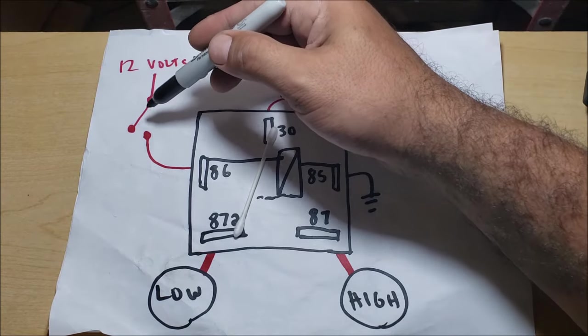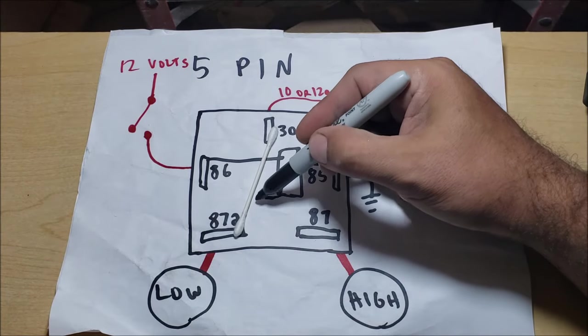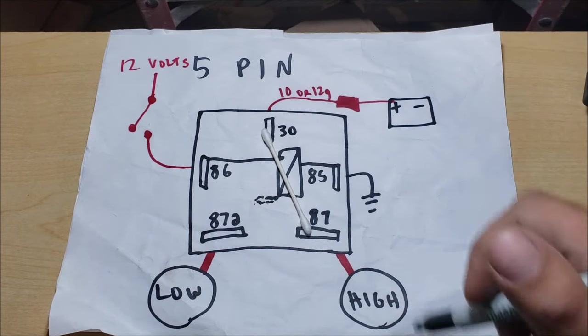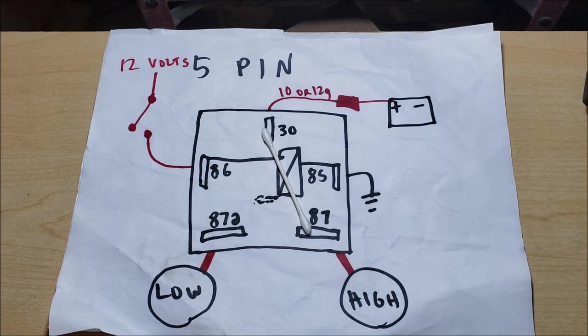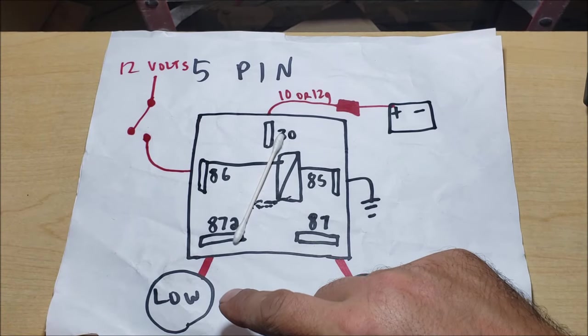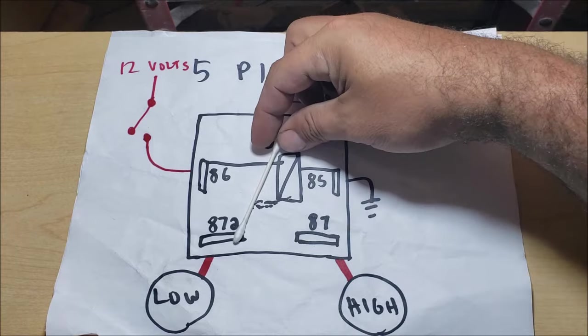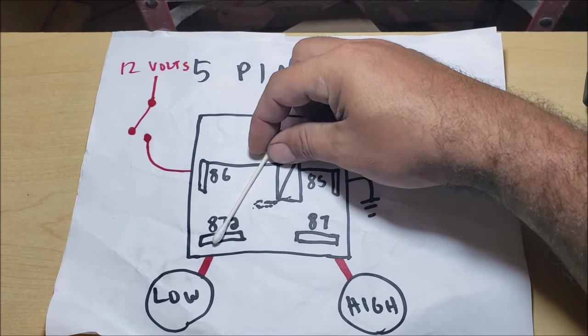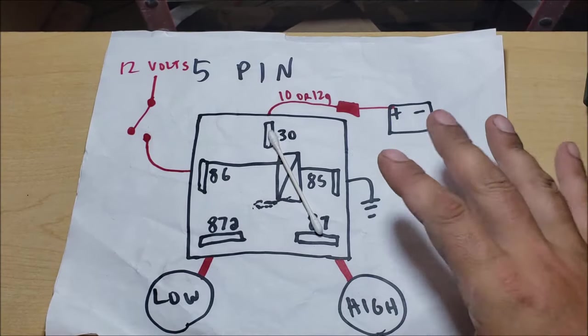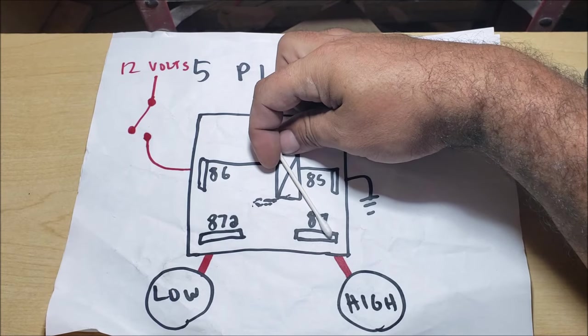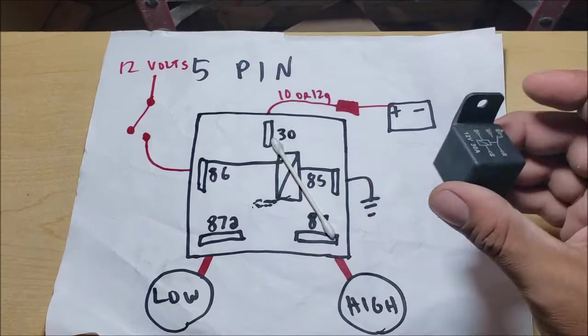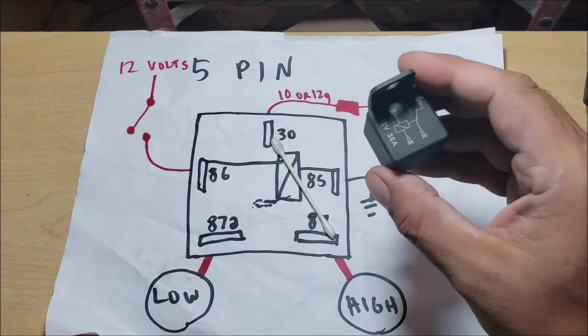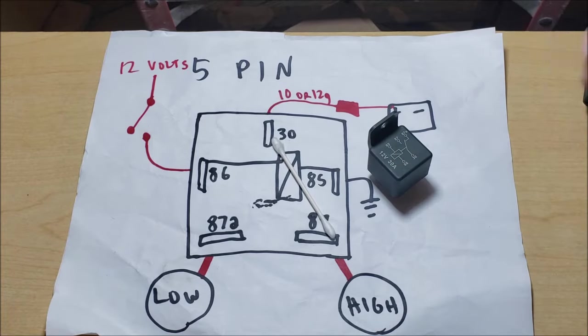So then you turn your high beam switch on, goes to 86, energizes the electromagnet and then it closes this switch. And now you're sending power straight to 87 to your high beams. So power is either going to 87a off, and then when you turn it on, power goes to 87. No matter how you look at it, power is either going here or it's going there. It does not turn off ever, either here or it's there. Relay off, relay on. That's why I don't understand why so many people try to use this relay when they absolutely don't need it.